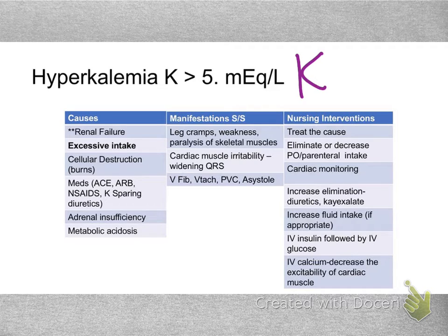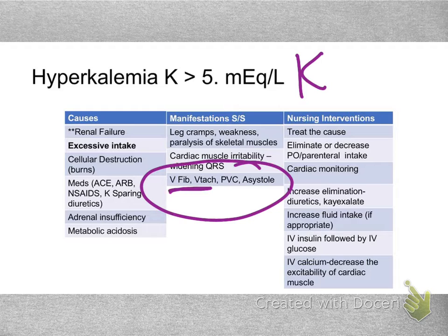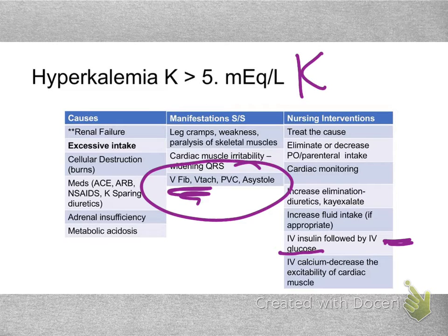Potassium is often high due to renal failure problems, excessive intake, or certain medications. The manifestations of hypo- and hyperkalemia can be similar, which is confusing. What we're really worried about are dysrhythmias and lethal dysrhythmias. A quick treatment for high potassium is IV insulin followed by IV glucose, which forces potassium from extracellular to intracellular. We must follow the insulin with glucose or we'll bottom out the patient.